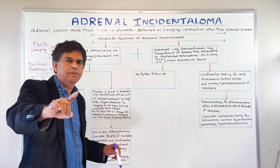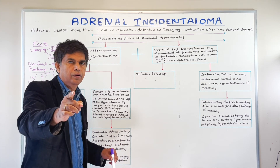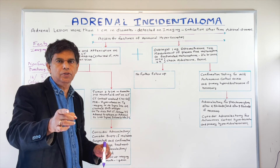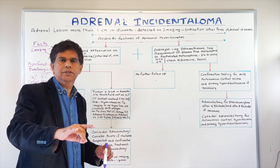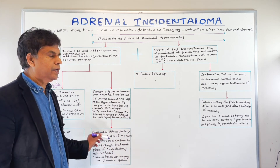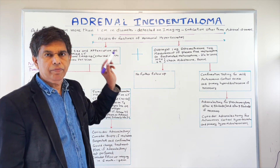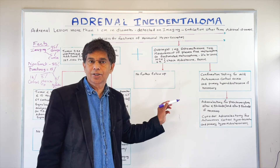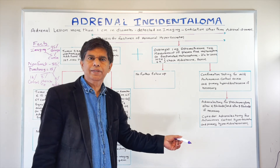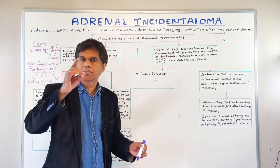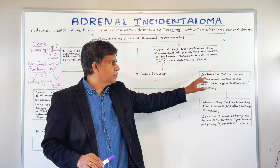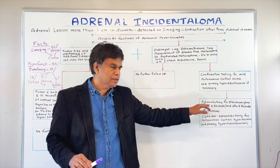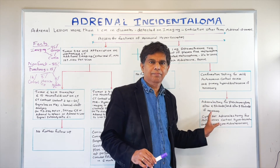Is there a role for biopsy? No, no, no. Don't pick that answer on a test. Sensitivity is very bad — take it out. On the functional side, 15% could be functional. Rule out cortisol secretion — you know the test. Rule out pheochromocytoma — you know the test. If there's hypertension and hypokalemia, think aldosterone. Confirmatory testing: increased cortisol, decreased ACTH — then consider adrenalectomy. Make sure you do alpha blockade and beta blockade.